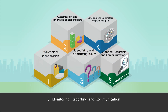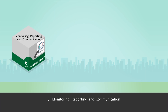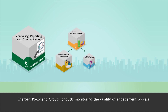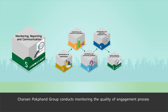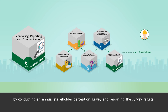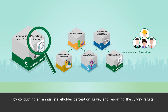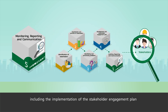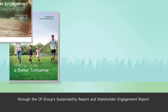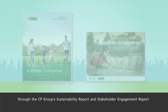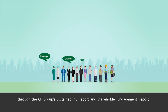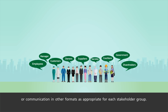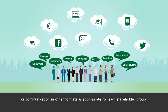Step 5: Monitoring, Reporting, and Communication. Charon Pocopon Group conducts monitoring of the quality of the engagement process by conducting an annual stakeholder perception survey and reporting the survey results, including the implementation of the stakeholder engagement plan, through the CP Group Sustainability Report and Stakeholder Engagement Report, or communication in other formats as appropriate for each stakeholder group.